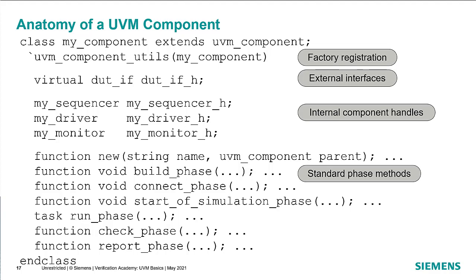In any UVM component you have some basic things that every component is going to have. You extend from UVM component or one of the other UVM component extensions. You register with the factory using the component utils macro. You potentially have some external interfaces and some internal component handles that you need to create. Then you have the standard phase methods: the constructor, build phase where you instantiate components, connect phase where you connect them together, start of simulation to double-check things or open files before simulation, run phase as the guts of the simulation, and then extract phase, check phase, and report phase at the end — where you gather information about what happened, check results, and report out.